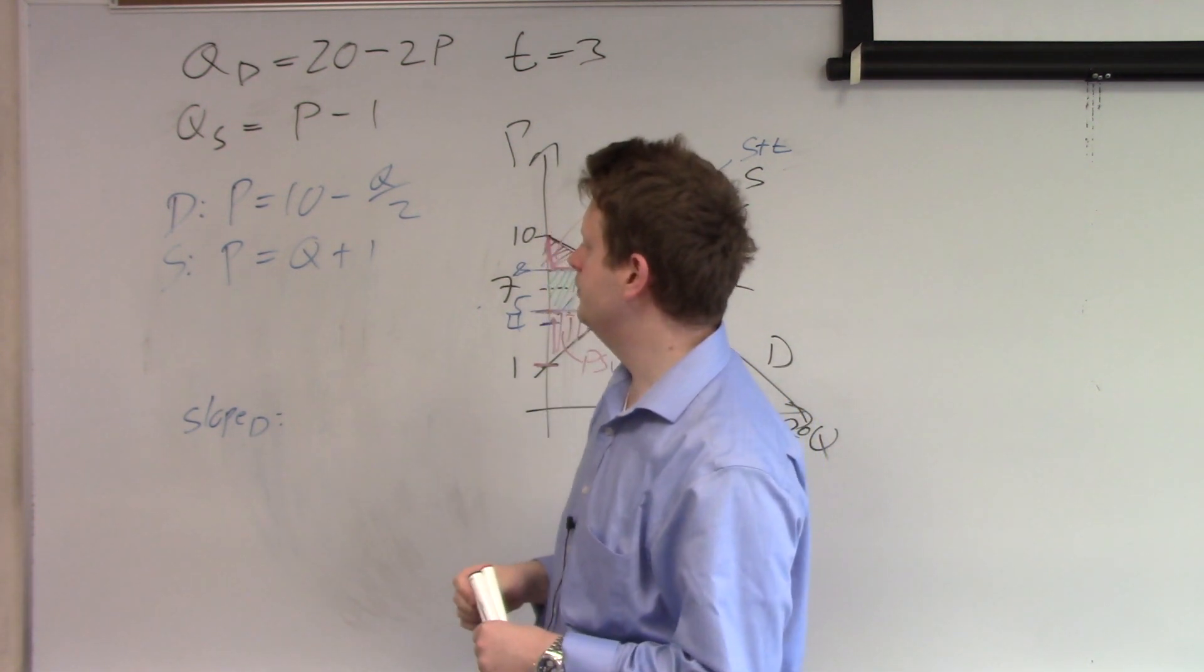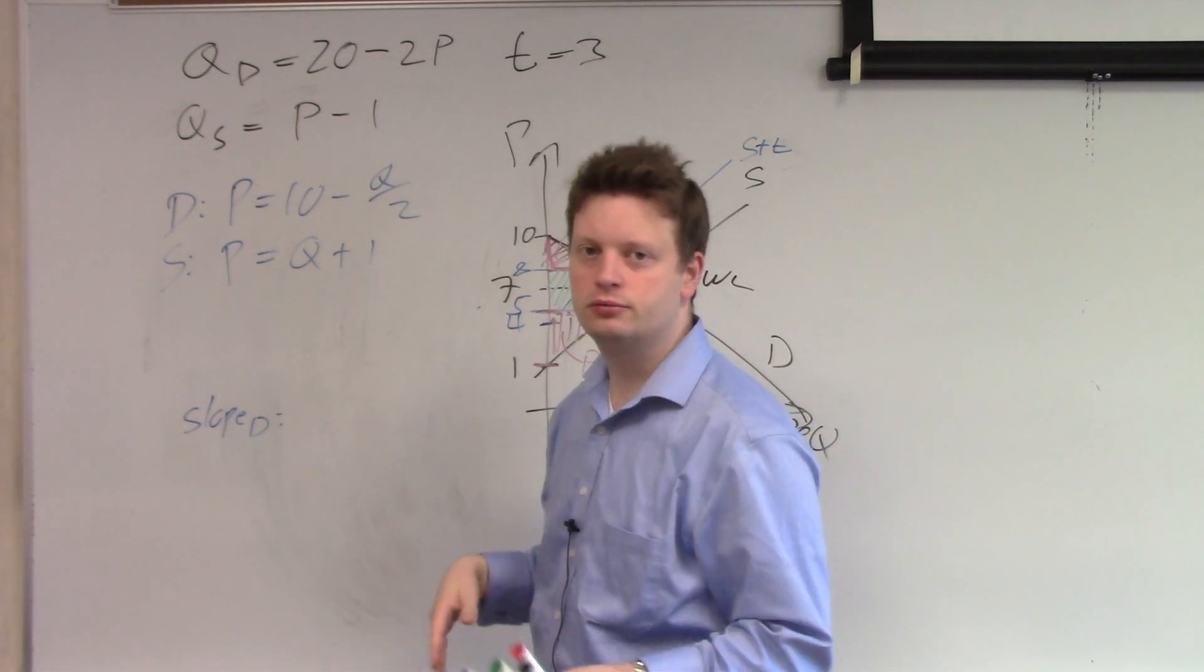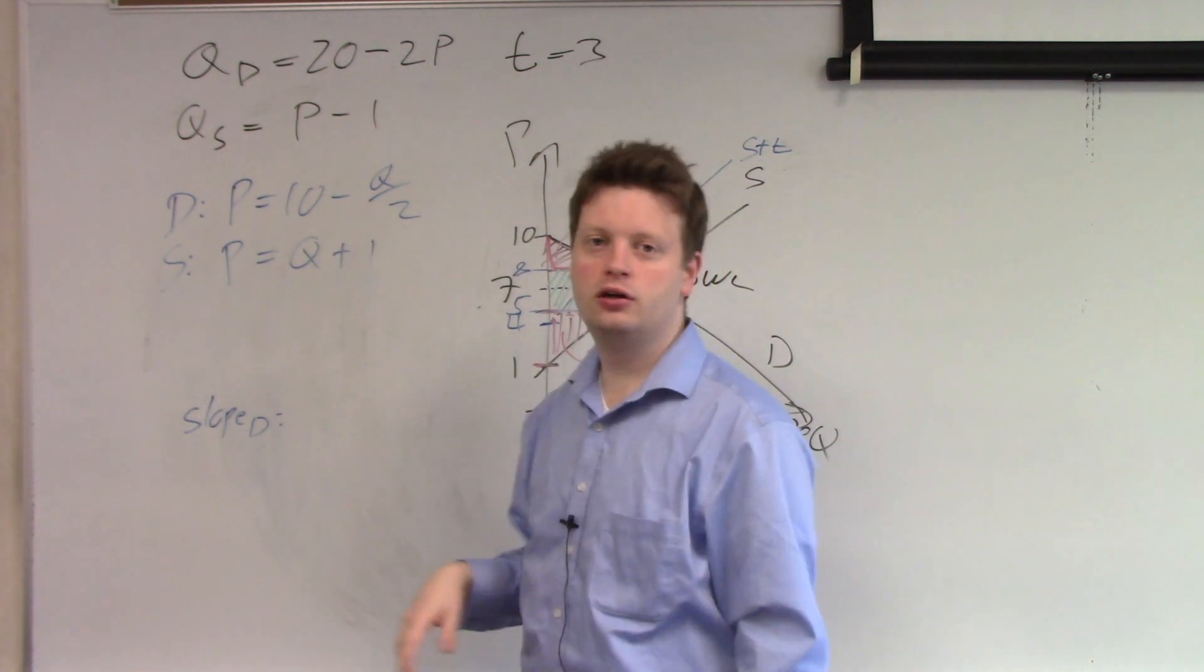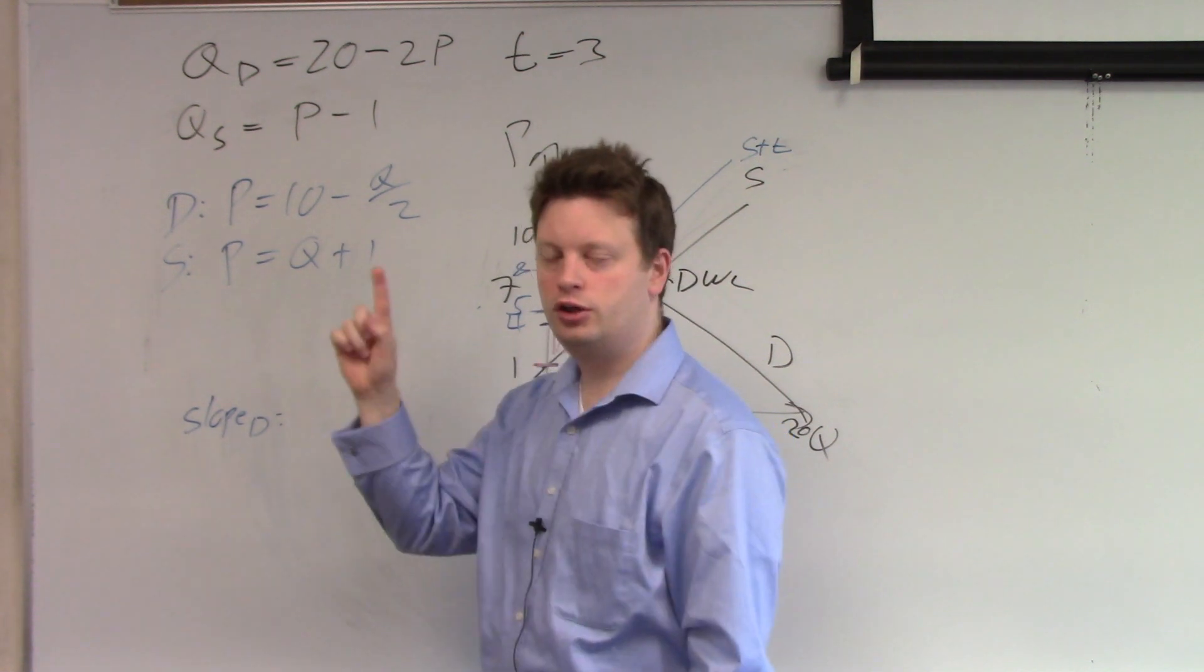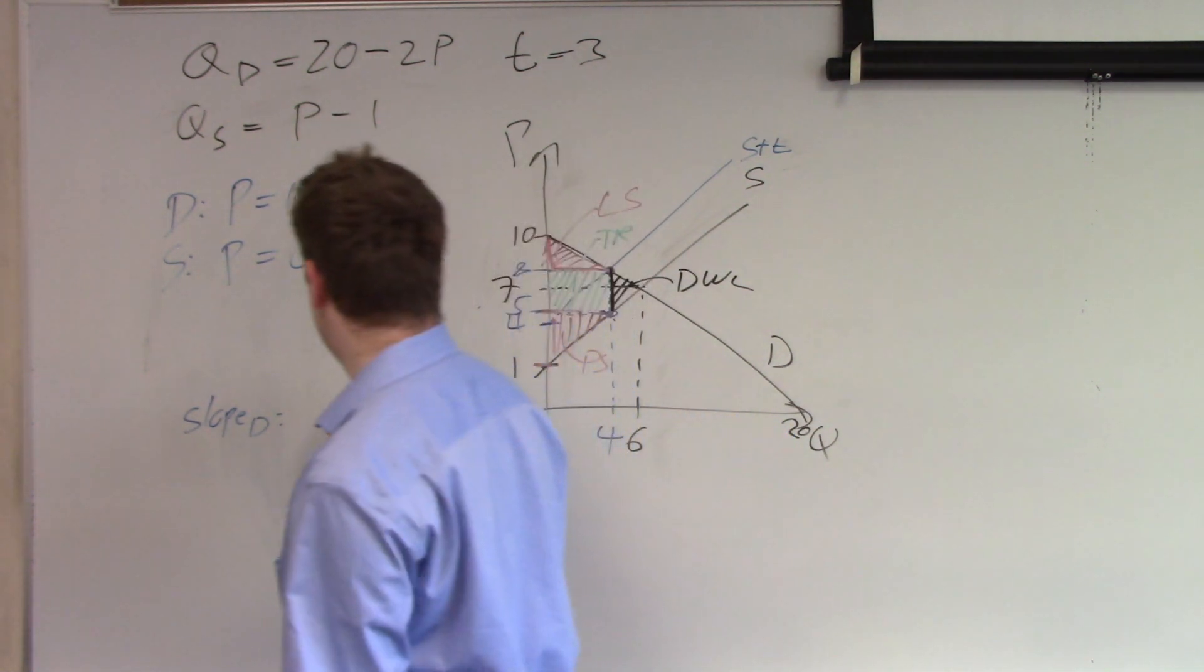We don't worry about the negative sign here. And then it's Q divided by 2. So 1Q divided by 2. So the slope is minus 1 half.